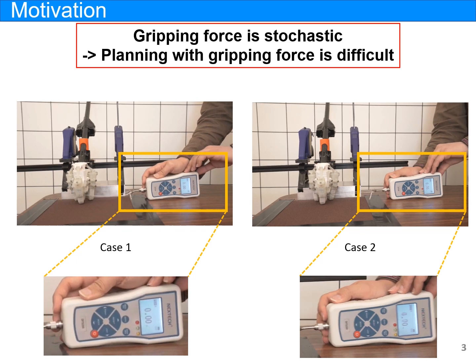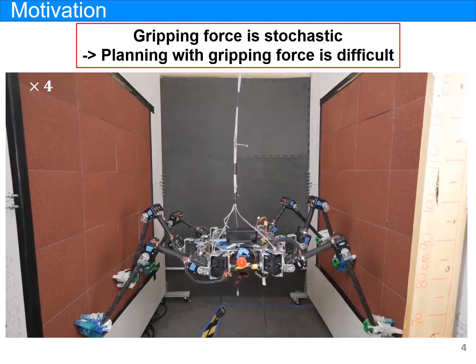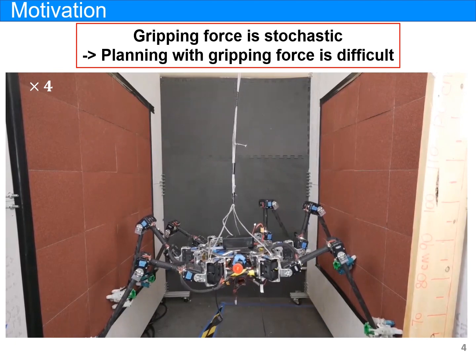However, planning in consideration of grippers is difficult because the gripping force is stochastic. Even on the same surface, the gripper generates highly random forces. Without incorporating the randomness of the gripping force, the robot can fall from the walls easily.